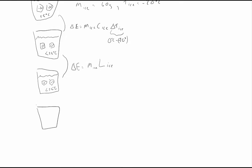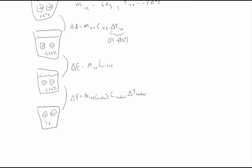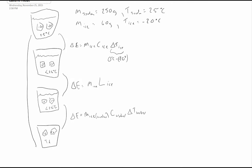The final stage is that this water — which was formerly ice — will reach some final temperature, which is the same as the final temperature of the soda. The change in energy for this step uses the mass of the ice, because the mass stays the same whether it's ice or water. But now you need the specific heat of water, since it's actually water. The delta T of the water goes from zero degrees Celsius up to the final temperature.